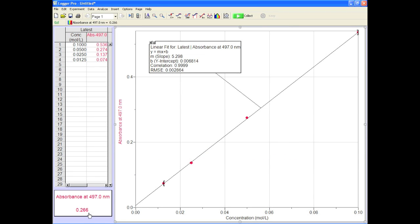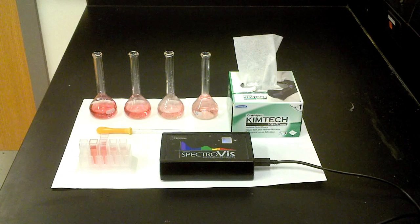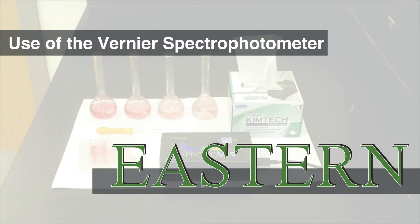Now all you have to do is use your data to find the concentration of your unknown. That's a snap, right? Time to clean up. Now you know how to create a calibration curve using your Vernier spectrophotometer.